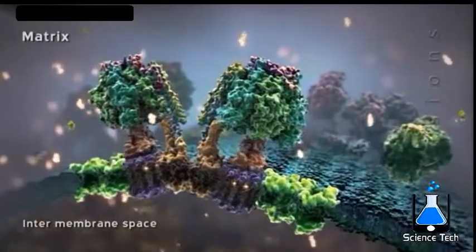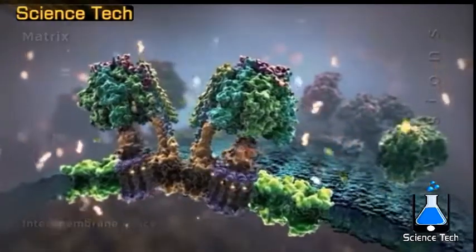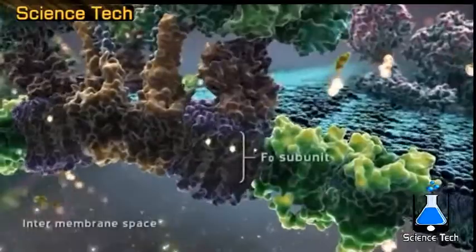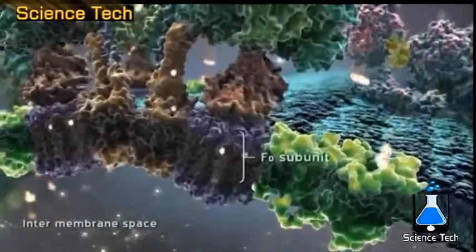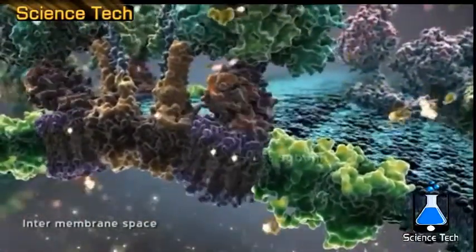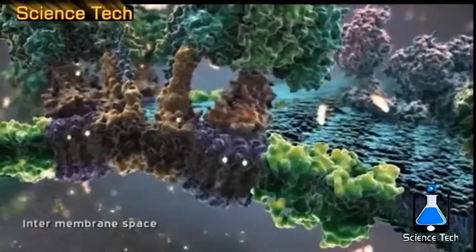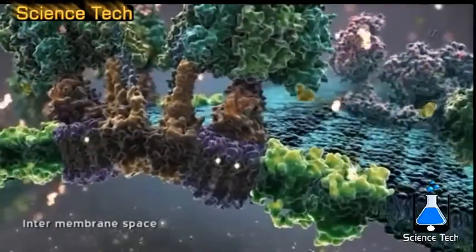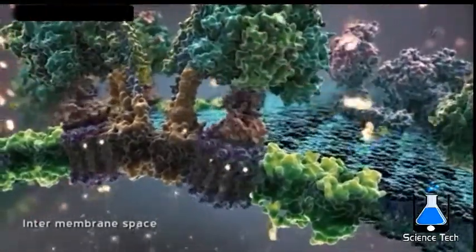Protons flow back into the matrix through a component of the ATP synthase called F0. The membrane-embedded ring structure of F0 binds protons in the intermembrane space and releases them on the other side of the inner membrane into the matrix.